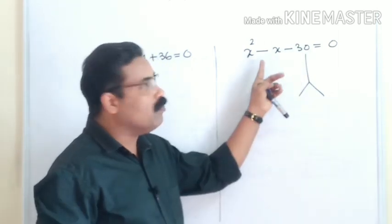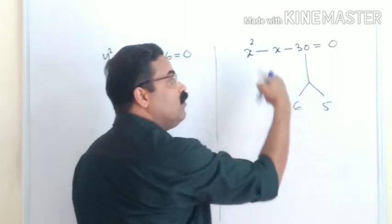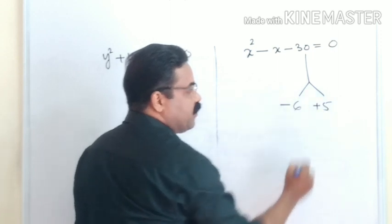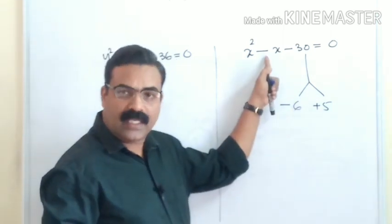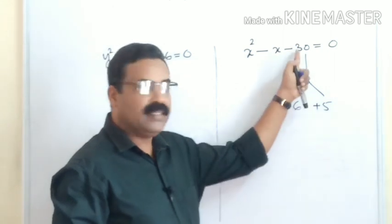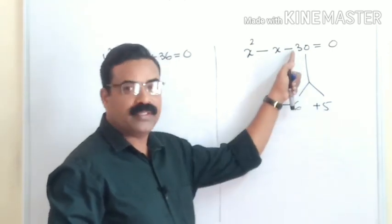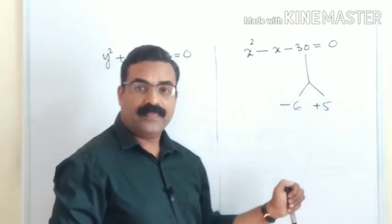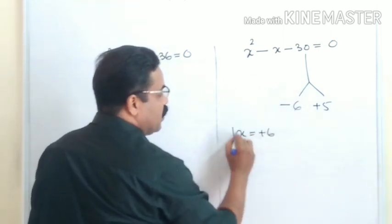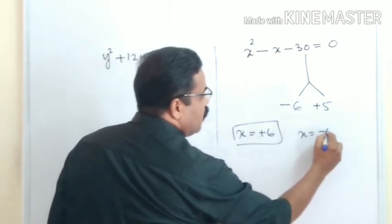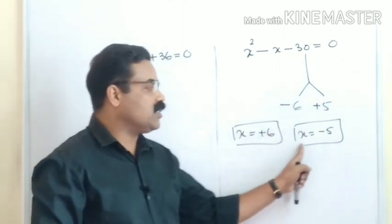Taking numbers 6 and 5: −6 + 5 = −1 and −6 × 5 = −30. Both conditions are satisfied. Directly writing the answer: x = +6 and x = −5. You can change the sign of the split numbers to get the x values without writing out all intermediate steps.